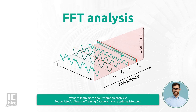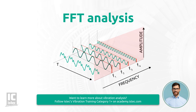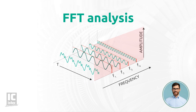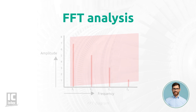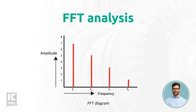Each frequency component has its own strength — its amplitude. This frequency is placed as a single spike in the right place on the x-axis. The height of the spike depends on the amplitude of the signal, and the strength of the signal can be read on the y-axis.